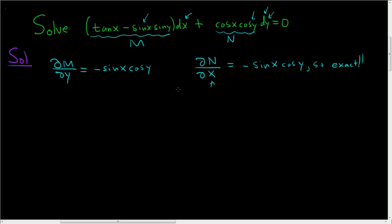So it is exact. So what does it mean for it to be exact? Well, this is exactly what it means. It means there exists, that's what this weird looking E means, there exists a function F such that the first partial derivative of F with respect to X is equal to this guy here. So tan X minus sine X sine Y.